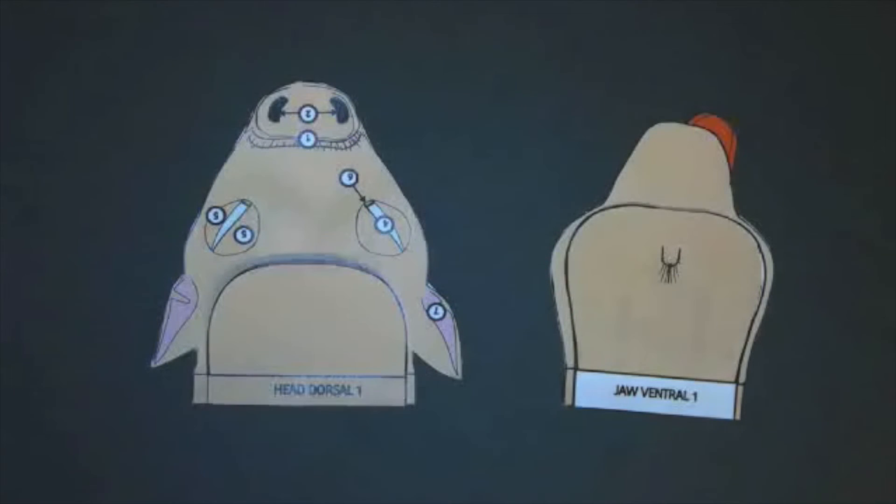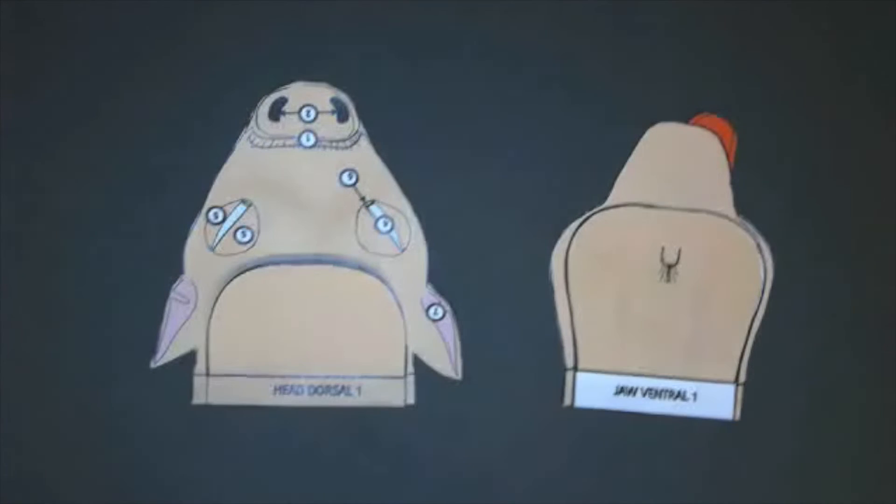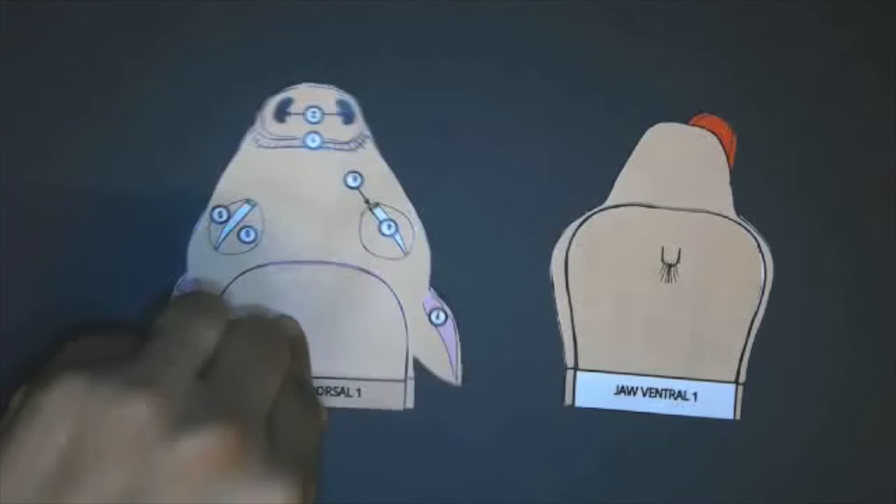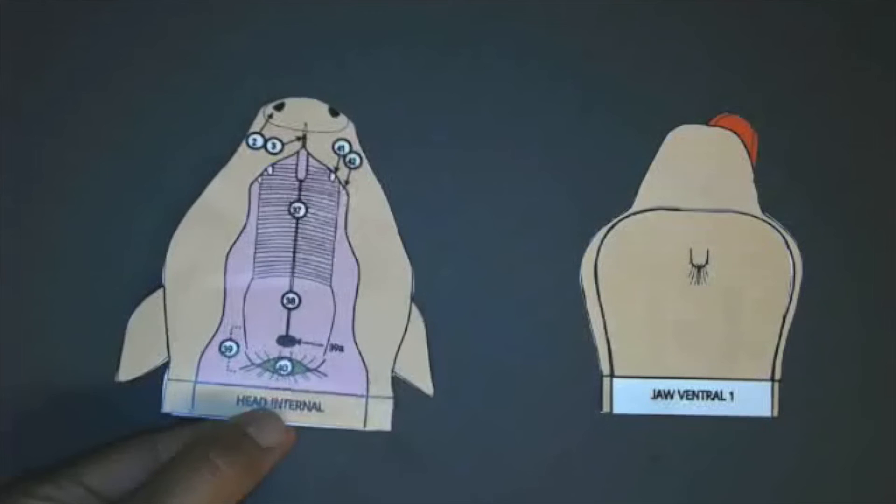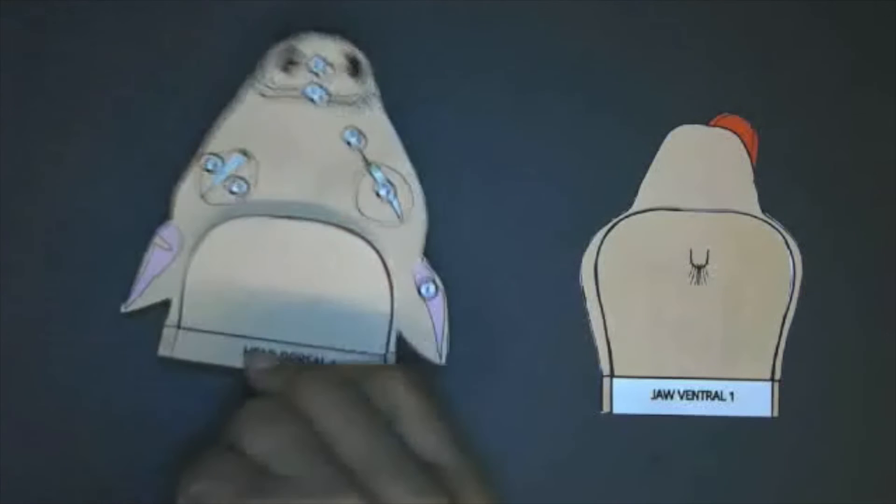Now that we have both the top and the bottom heads built, it's time to review what they look like. On the left hand side we have the head dorsal. On one side you have the eyes and on the other you have the roof of the mouth.